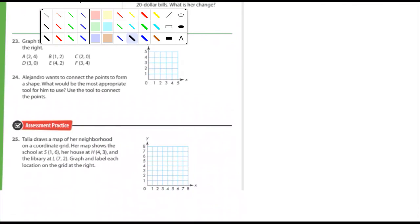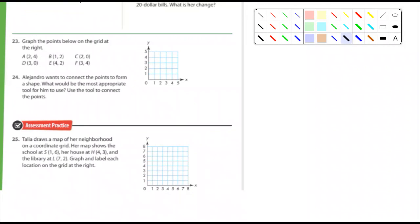Number 23, looks like some more graphing. It says graph the points below on the grid at the right. You should be able to do that. Number 24, at what, how do you, okay, we'll just call him, let's see here, that's Mr. Delgado. Mr. Delgado wants to connect the points to form a shape. What would be the most appropriate tool for him to use? And then use that tool, if you have one, to connect the points. So these, talking about connecting, these two are connected. So apparently, when you do 23, it's going to make some kind of shape. At least, I'm assuming it is. And they're asking, what tool would you use to connect the points?